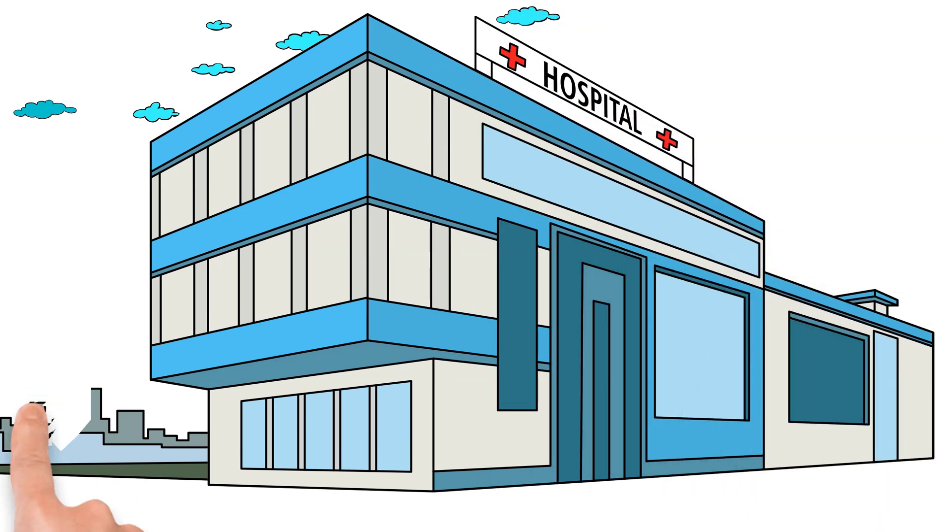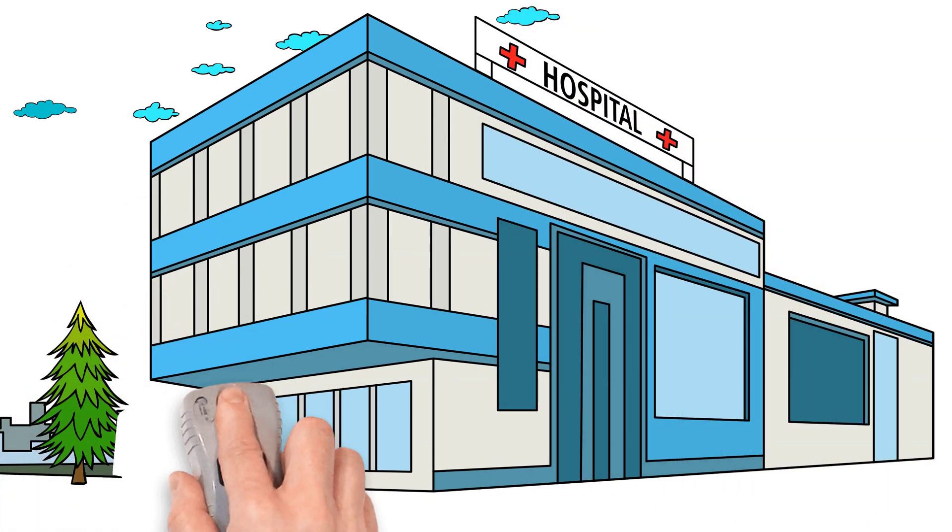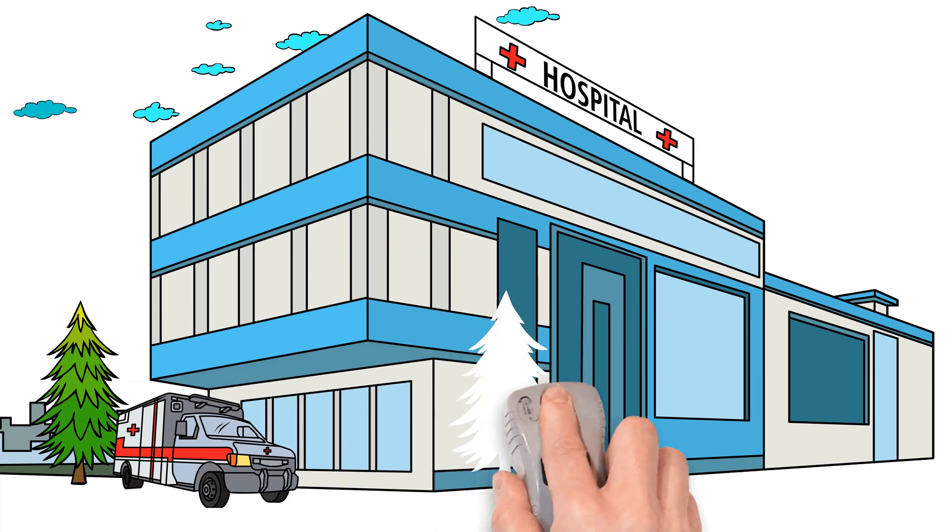Just select the element that you want to see in your scene and then drag and drop it onto the canvas, and Doodly will draw it out for you automatically. It really is just that simple.